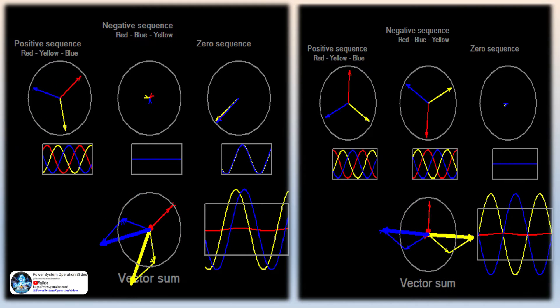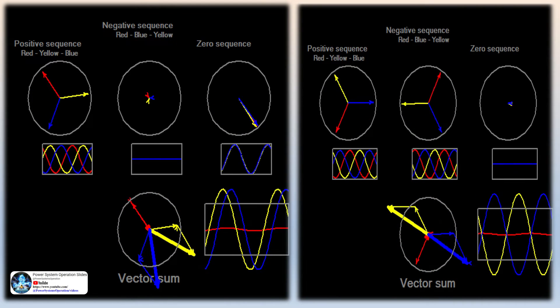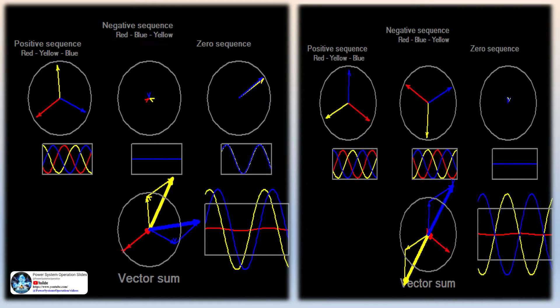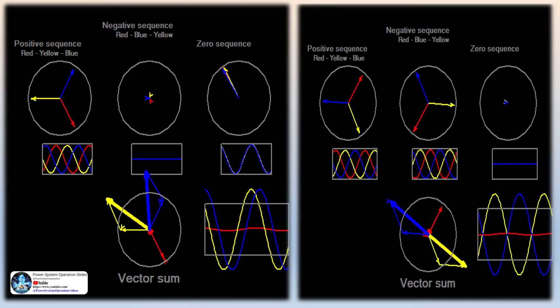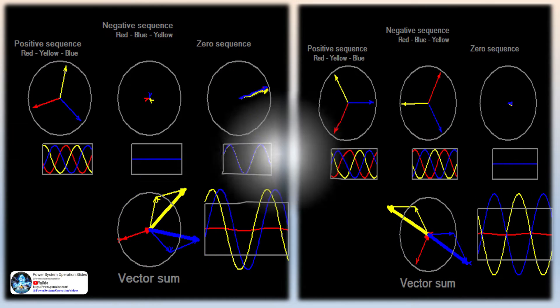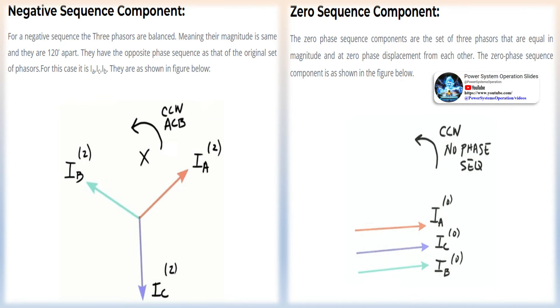Remember, maintaining balance among the three phases is crucial for reliable operation in electric power systems. However, in real-world scenarios, imbalances can occur due to various factors such as faults, asymmetrical loads, or system configuration changes. When a three-phase circuit becomes unbalanced,